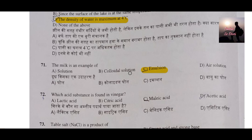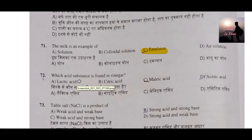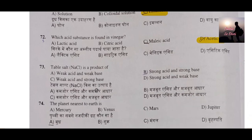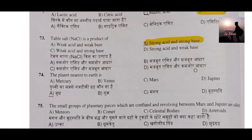Question number 72: Which acid substance is found in vinegar? Acetic acid is found in vinegar — remember this. Question number 73: Table salt is a product of what? It is made from a strong acid and a strong base. The combination of a strong acid and a strong base forms table salt.